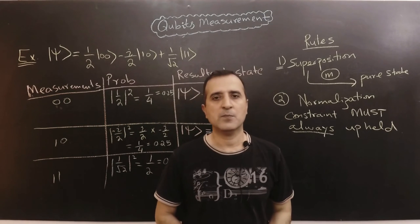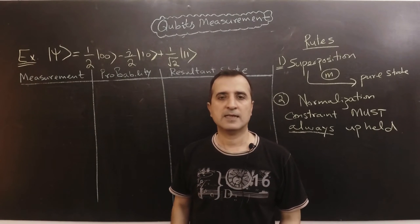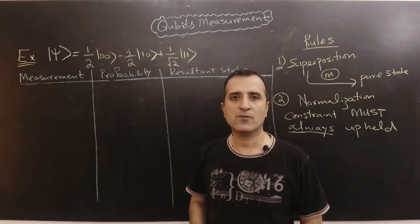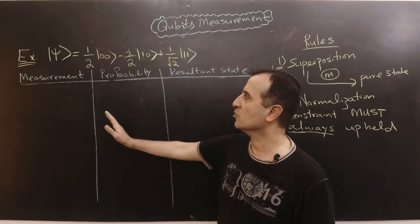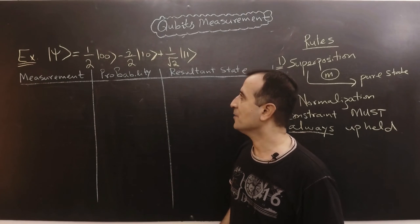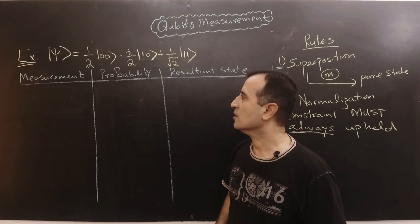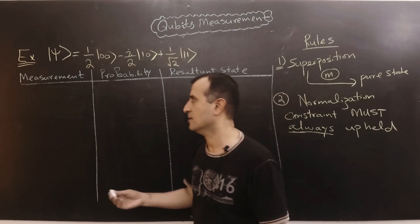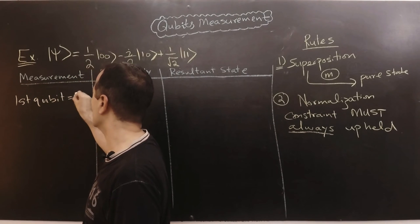Now let's look at an example for partial measurement. In example two I have the same two-qubit register and I have to partially measure it. Partial measurement means I measure only the first qubit while keeping the second qubit untouched, or I measure only the second qubit while keeping the first qubit untouched. Assume I have measured the first qubit and obtained a measurement of one.